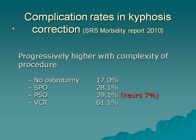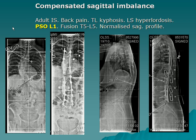What about complications with the PSO? Yes, there are complications, but the neurological complication rate is not that high. We do a lot of PSOs and you never get complete paralysis. You do get some — typically quadriceps weakness, which is temporary and reversible. I tell patients something like 5%, which is consistent with the SRS morbidity report that claims 7%. So yes, it's a major surgery, but a very effective one.